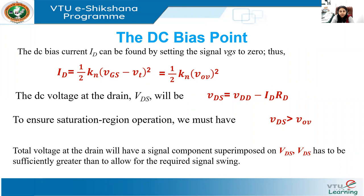Recalling the voltage transfer characteristics, the value of RD is fixed and the only variable remaining is VGS. Since the slope increases as we move closer to point B, we obtain a higher gain by locating Q as close to B as possible. In deciding the value of RD, it is useful to refer to the ID-VDS characteristics. Two load lines result in two extent points: Q1, which is very close to VDD, resulting in a severe constraint where the signal is clipped off.